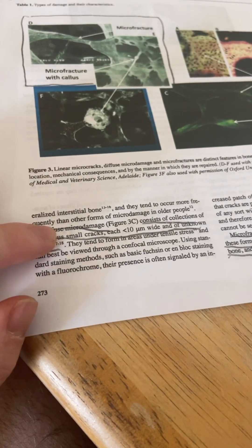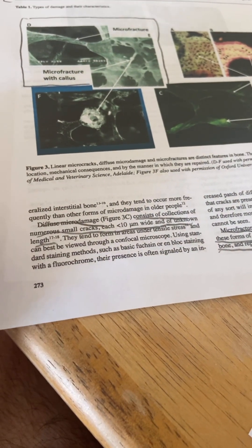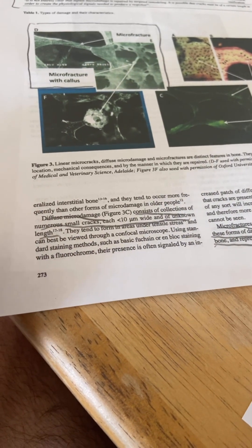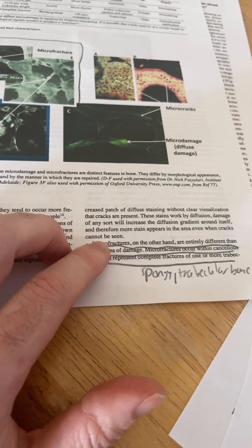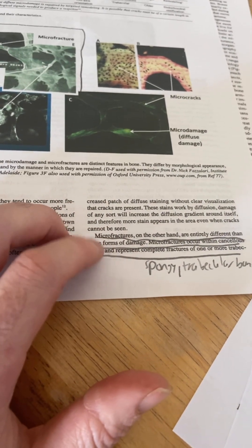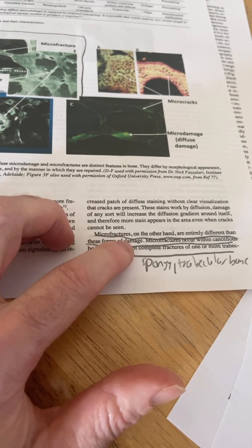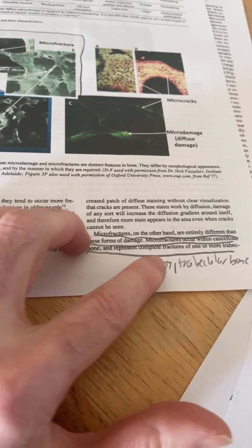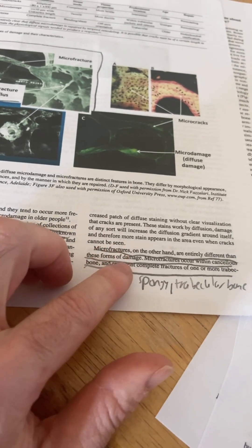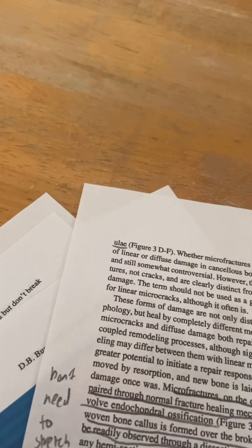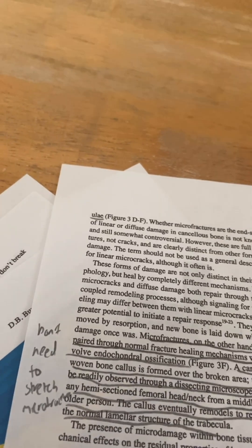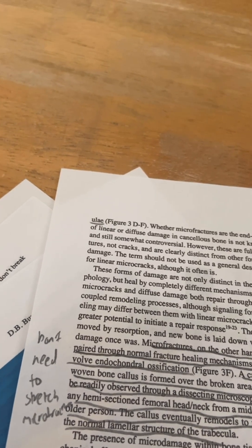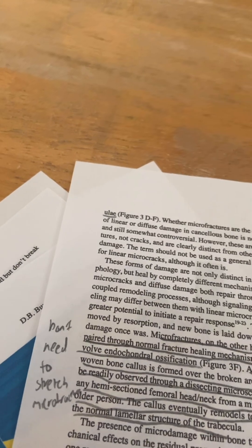Diffuse microdamage consists of collections of numerous small cracks, each less than 10 micrometers wide and of unknown length. They tend to form in areas under tensile stress and can be best viewed under a microscope. Microfractures - this is the one that's cited as a possible way to grow taller. Microfractures can occur within cancellous bone, which refers to the spongy trabecular bone within the cortical bone, and represent complete fractures of one or more trabeculae. Obviously, it's harder to get a complete fracture than an incomplete fracture.